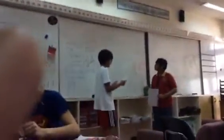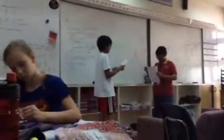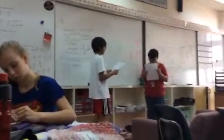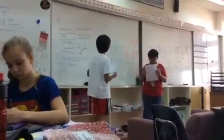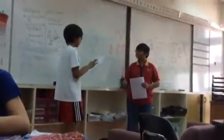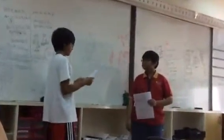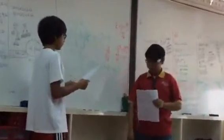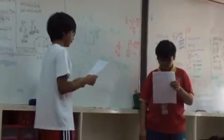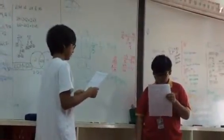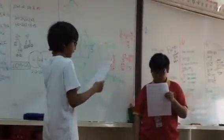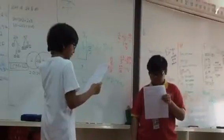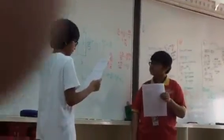So we're on problem four, and it said to use a model and support your model with the standard algorithm. The first expression was four-fifths multiplied by three and two-thirds.